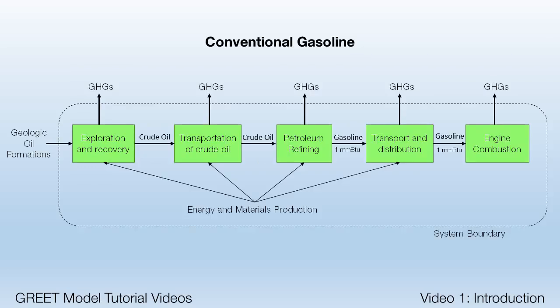We can examine these aspects of LCA through an example of conventional gasoline. In this case, gasoline is the product, and the system boundary might include the processes of exploration and recovery, transportation of crude, petroleum refining, transport and distribution, and finally combustion. For each process in the system, there are material and energy inputs which transform intermediate products until the final process of combustion ultimately transforms crude oil into tailpipe emissions. We might decide to quantify the total CO2 emissions from each process in the system, resulting from a functional unit of 1,000,000 BTUs of gasoline produced within the system. Other aspects of LCA will be explored later in this video series as we explore the use of GREET.